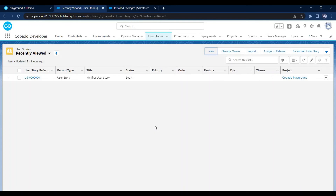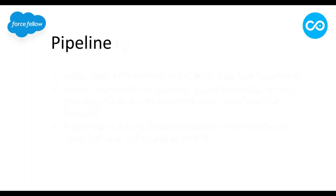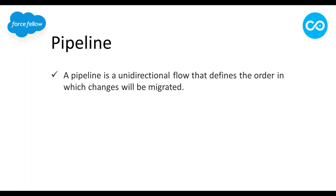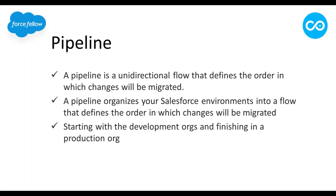Next we have Pipeline. A pipeline is a unidirectional flow that defines the order in which changes will be migrated. With the help of a pipeline, we can organize our Salesforce environments into a flow showing how we want to move changes from one environment to another — generally from lower environments to upper environments, meaning from development orgs up to the production org.